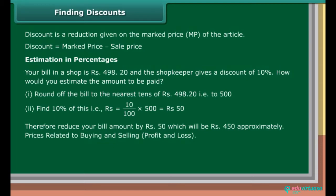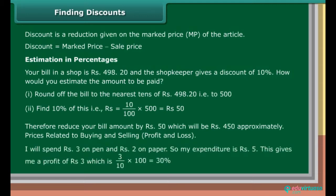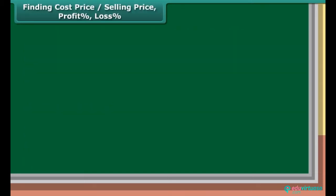Price related to buying and selling, profit and loss: I will spend Rs. 3 on pen and Rs. 2 on paper. So my expenditure is Rs. 5. This gives me a profit of Rs. 3, which is 3 upon 10 into 100, equal to 30%. Finding cost price, selling price, profit in percentage, loss in percentage.